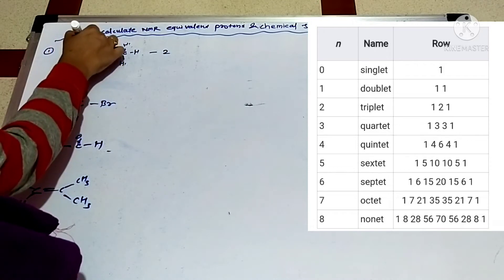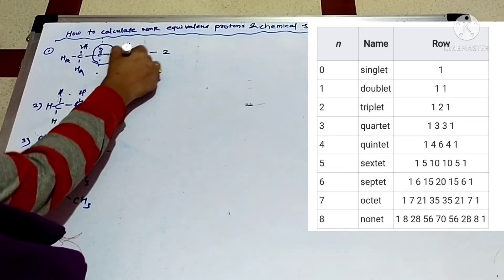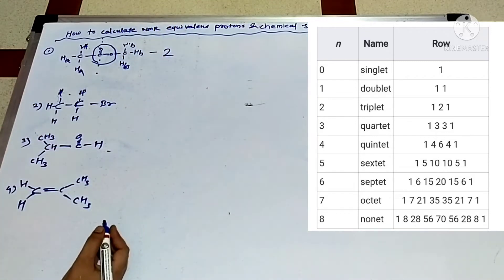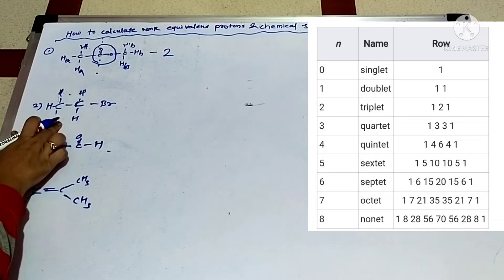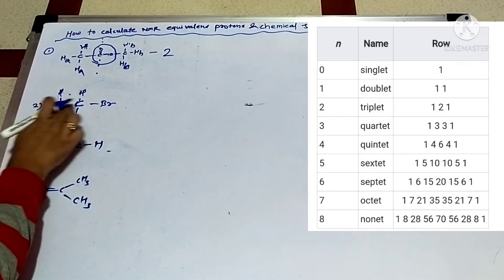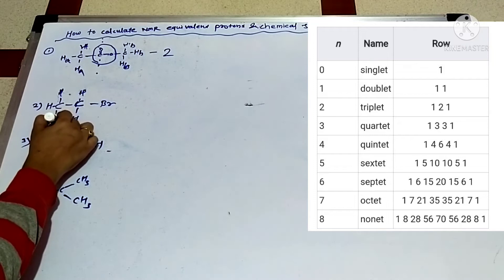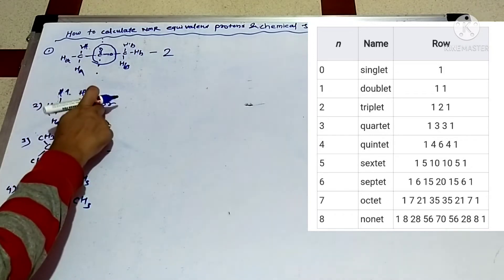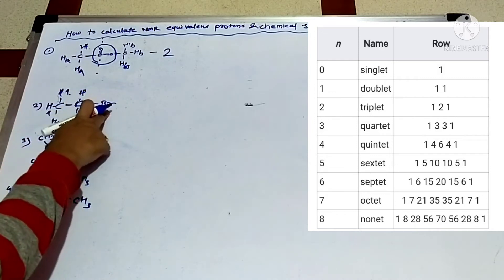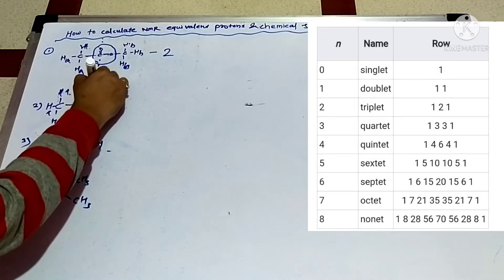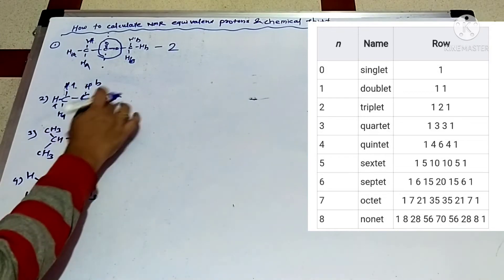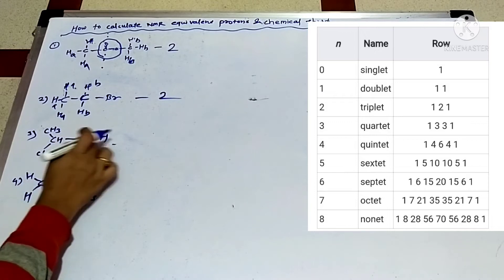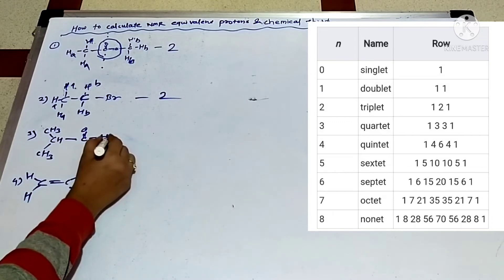The two CS3 groups are equivalent — labeled A, A, A and B, B, B — so there are two types of equivalent protons. Next example: CS3-CS2-Br. The CS3 gives A-type protons, and the CS2 connected to bromine gives B-type protons. Two types total.